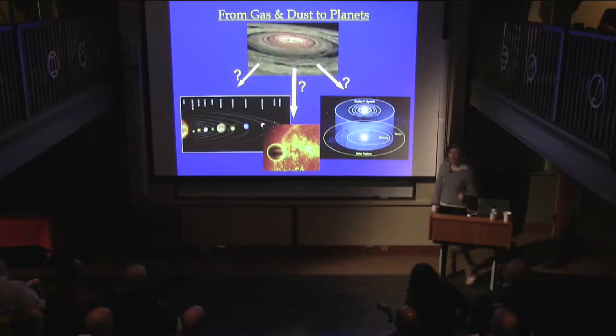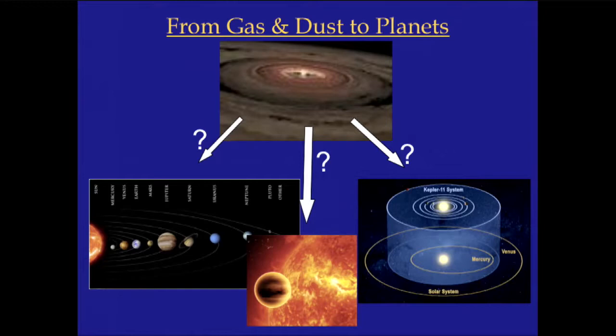When we try to understand how planets form, we are faced with the following challenge. We have a really good idea about the initial conditions, because we have these beautiful observations of discs around other stars, and we have a pretty good idea about the final outcome that planet formation theory should deliver, because we know we want to form something like our own solar system, or explain how you form hot Jupiters — planets as big as Jupiter orbiting very close to their host stars.